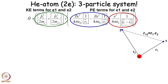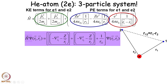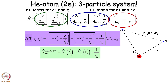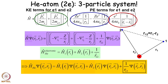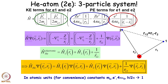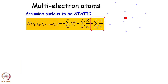If I rewrite the terms I can separate out the kinetic energy and potential energy. The green terms are kinetic energy, these are the electron-nuclear attractions, and these are the electron-electron repulsion. That means I can write the Hamiltonian as a combination of two one-electron Hamiltonians plus a 1/R12 term — everything is written in atomic units for convenience, so all constants are set to 1. The same picture extends to multi-electron atoms: I can write it as a sum of kinetic energy plus electron-nuclear attraction plus pairwise repulsion of the electrons.